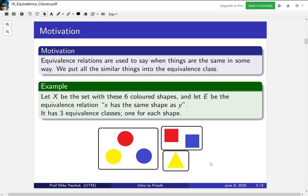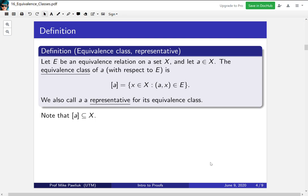Now let's see this a bit more formally. The definition of an equivalence class is this. Let E be an equivalence relation on a set X, and let A be an element of X. So X is a set, A is an element. The equivalence class of A with respect to this relation E is represented using square brackets. The definition is: the equivalence class of A is the collection of all x in X such that (a,x) is in the equivalence relation E. We also call A a representative for its equivalence class.